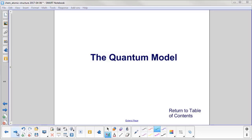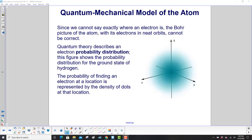The Quantum Model. Since we cannot say exactly where an electron is, the Bohr picture of the atom with its electrons in neat, circular orbits cannot be correct.